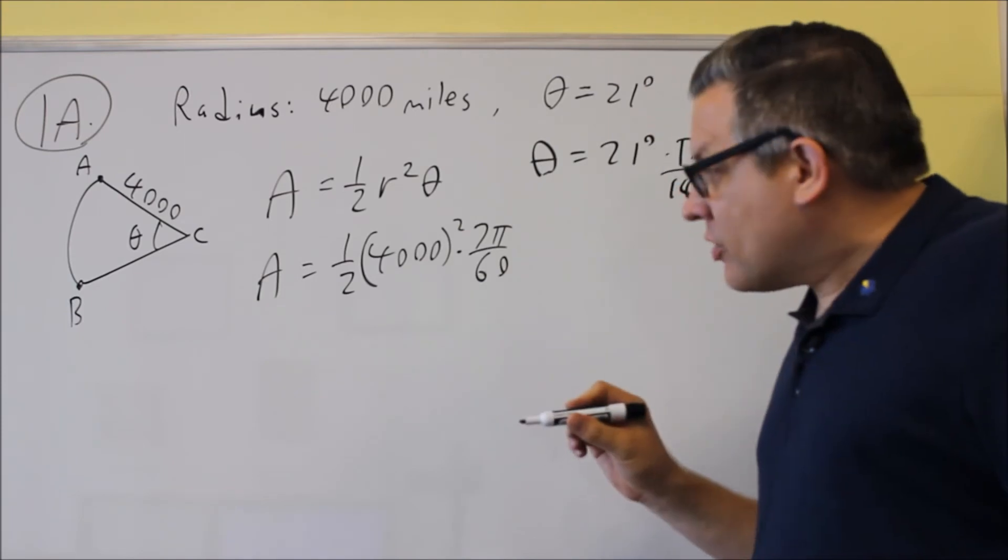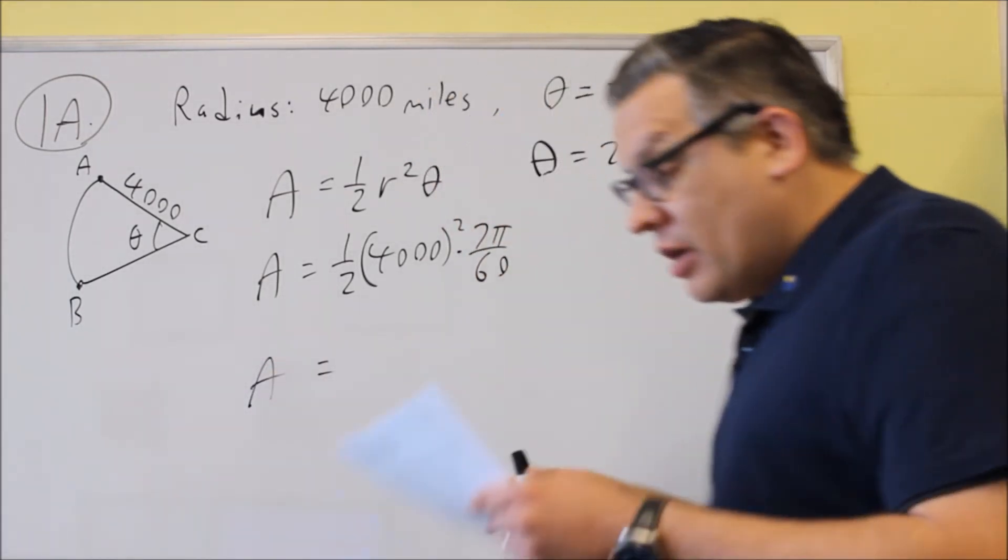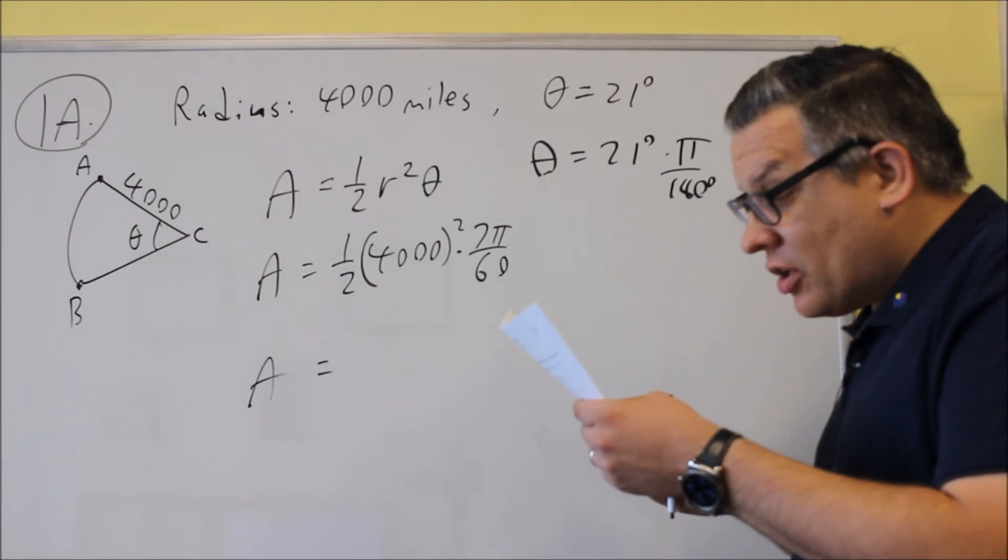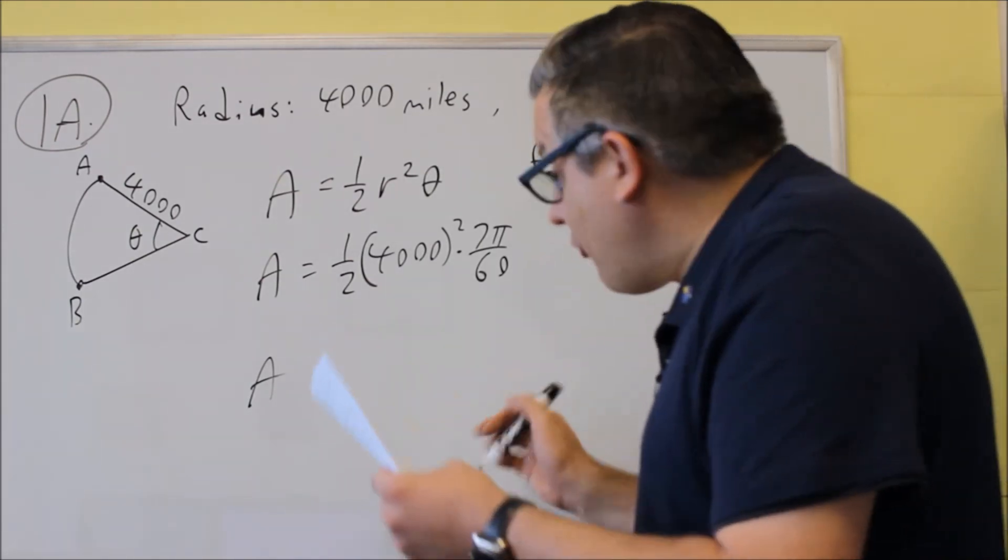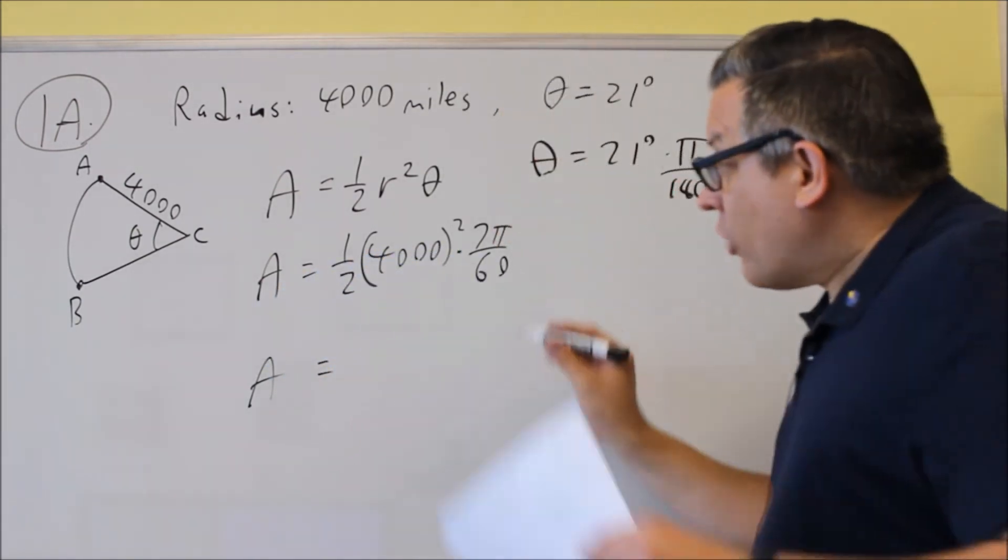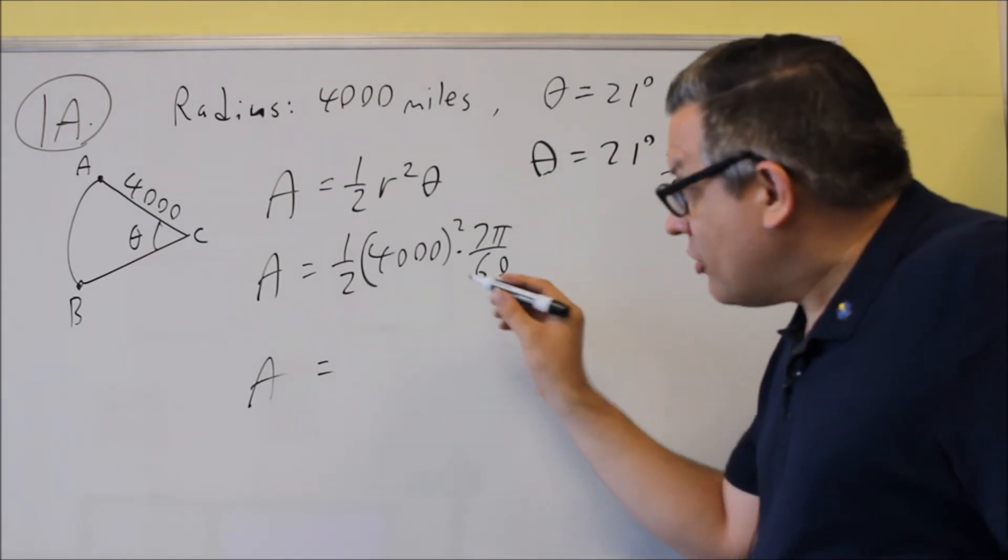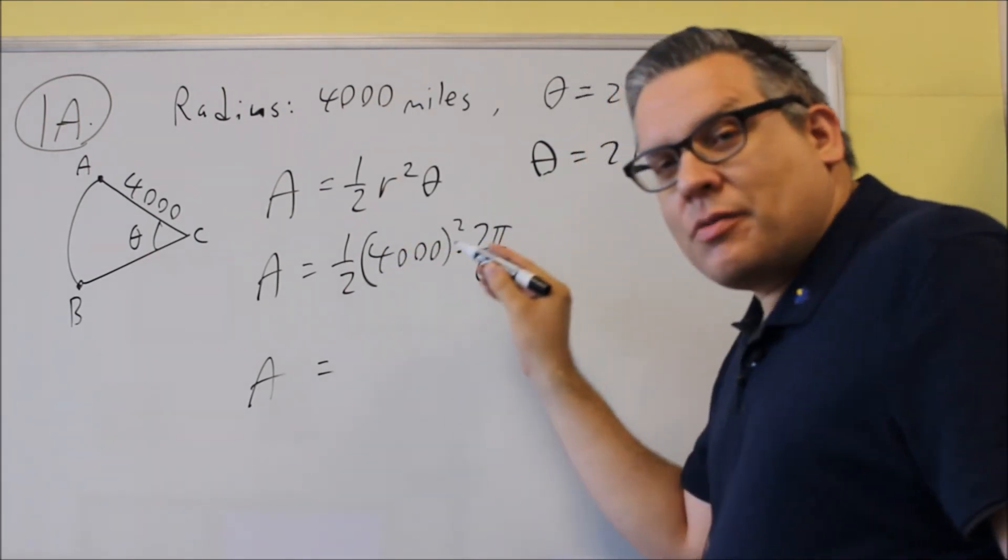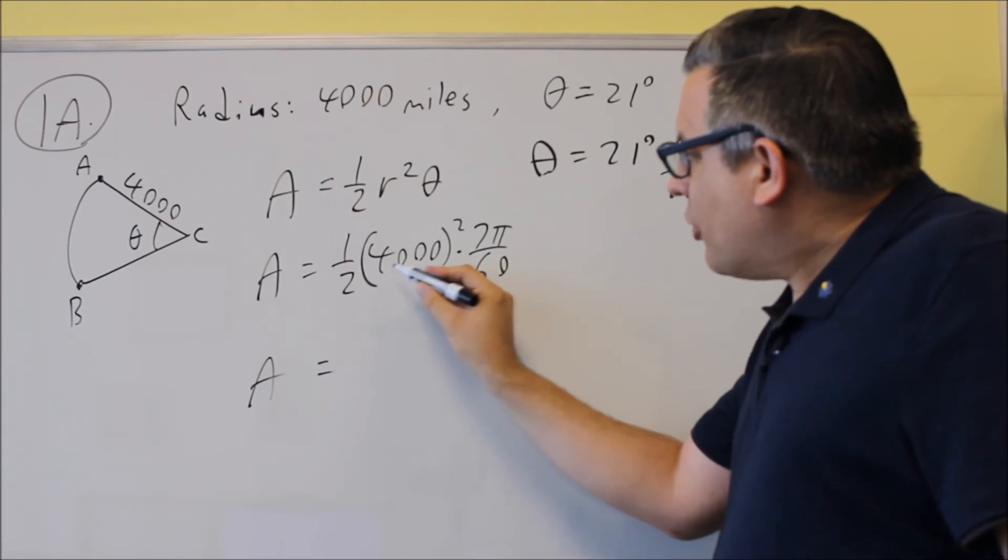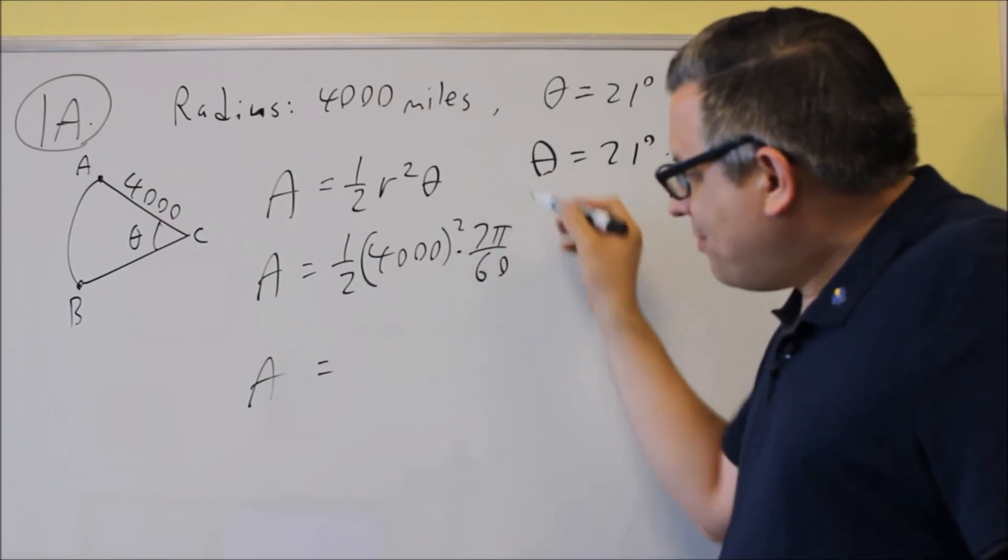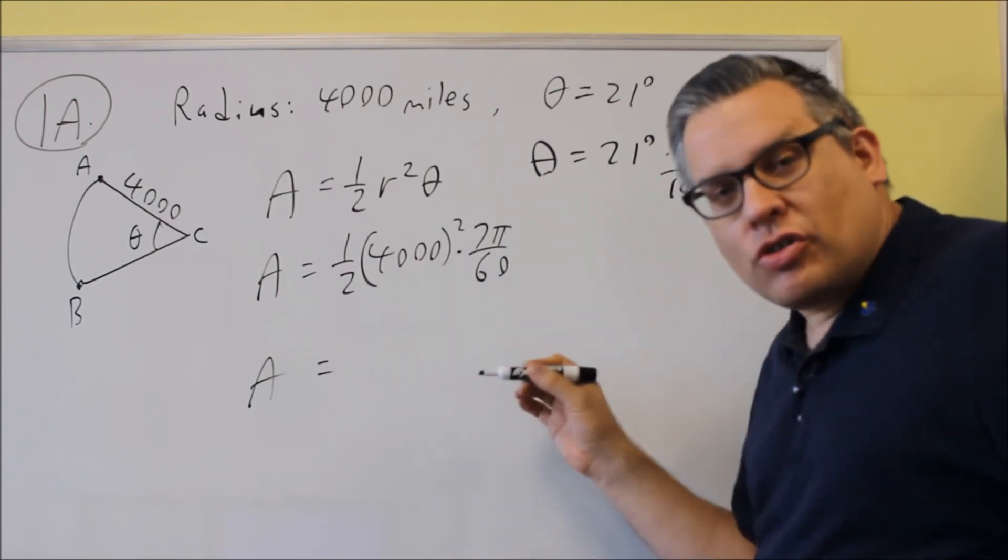So for this, I'm just going to give you the final answer on it. Now you could write this in terms of pi if you want to. So that would be 16 with 6 zeros there times 7 divided by 60. You could do all that.